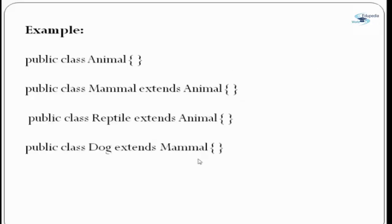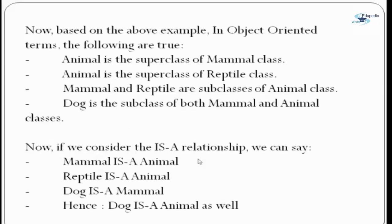Here is an example: there is a class Animal, then we have a class Mammal which extends Animal. Then there is a class Reptile which also extends Animal, and then we have a class Dog which extends Mammal. In OOP terms: Animal is a superclass of Mammal, Animal is a superclass of Reptile, Mammal and Reptile are subclasses of Animal. And Dog is a subclass of both Mammal and Animal, because Dog extends Mammal and Mammal extends Animal.